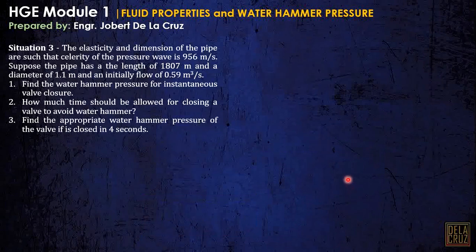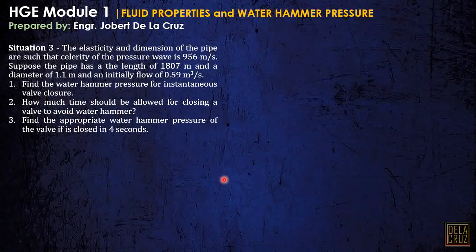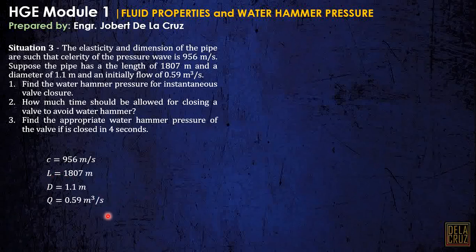Now let's go to the water hammer pressure problem. The elasticity and dimension of the pipe are such that the celerity of the pressure wave is 956 meters per second. The pipe has a length of 1807 meters, a diameter of 1.1 meters, and an initial flow of 0.59 cubic meters per second. The given parameters are: celerity C in m/s, length L, diameter D, and discharge Q (volume per time).